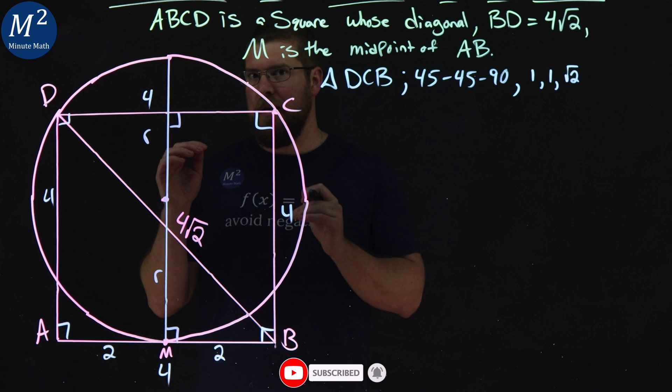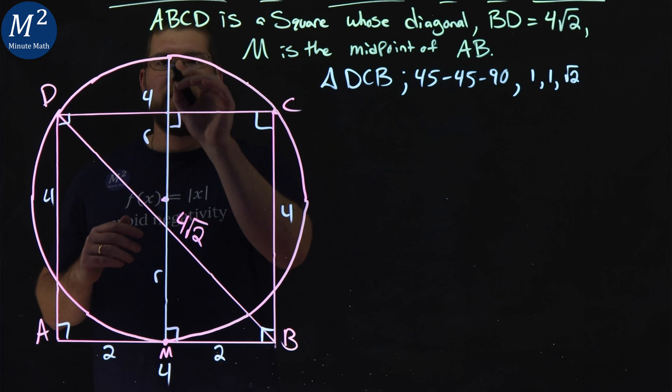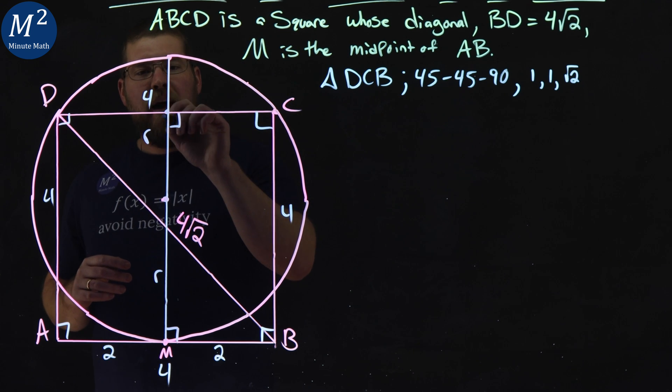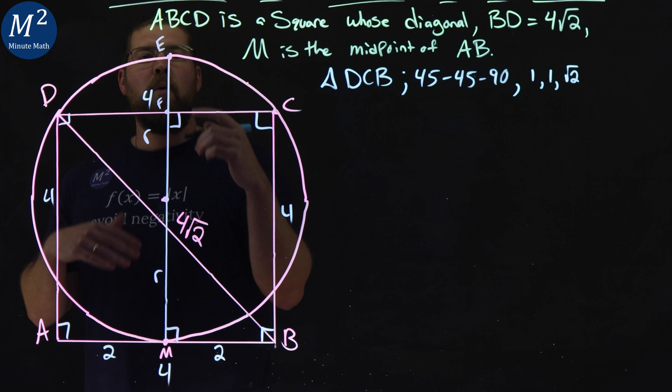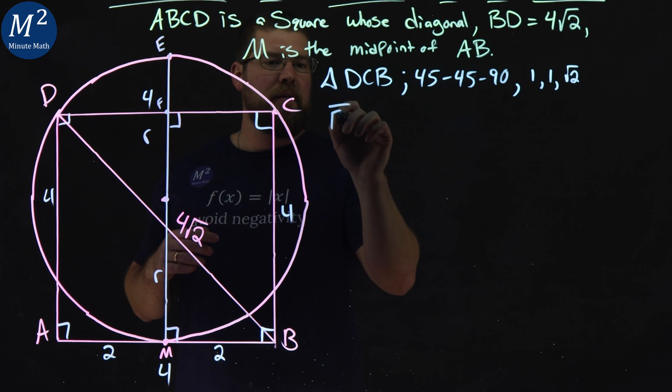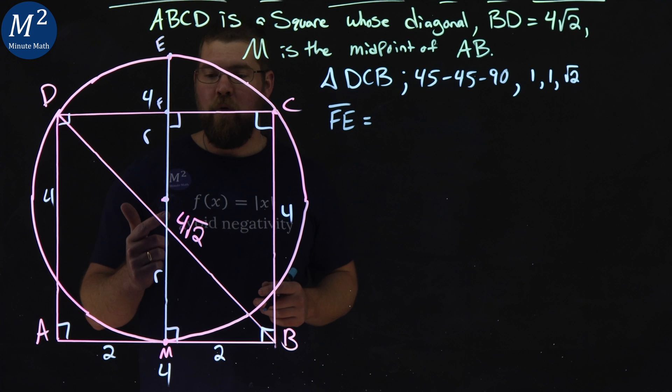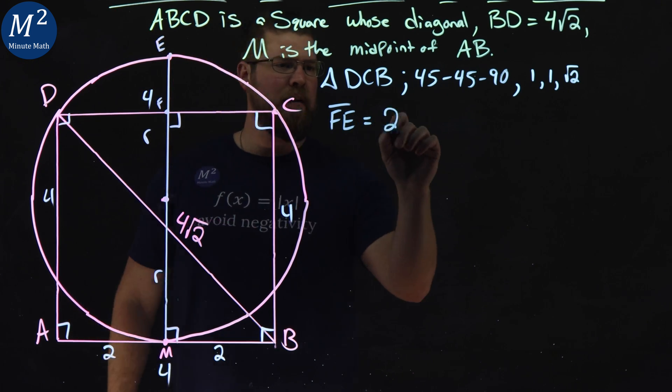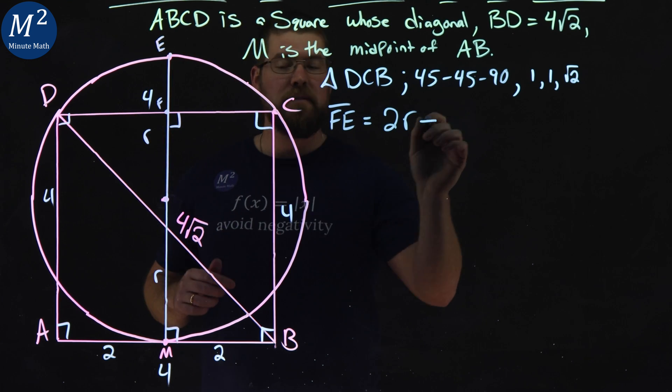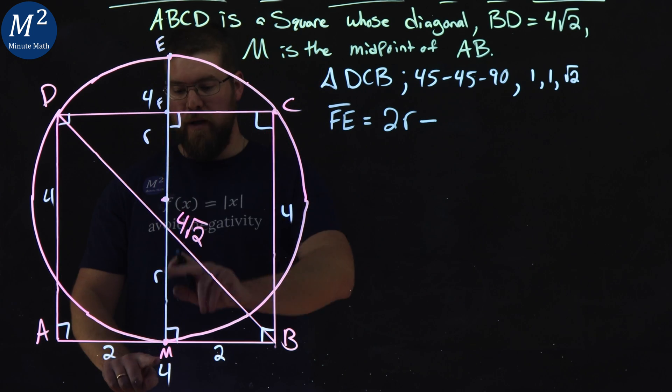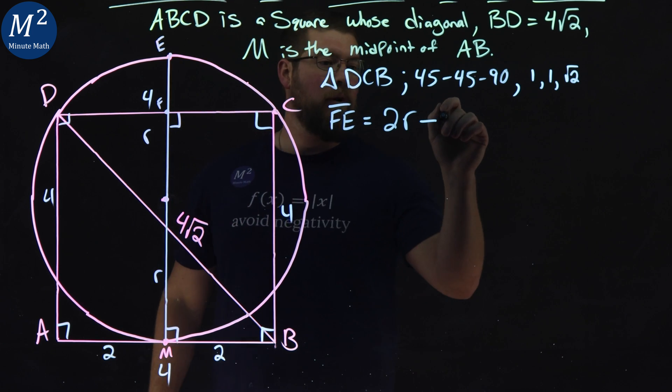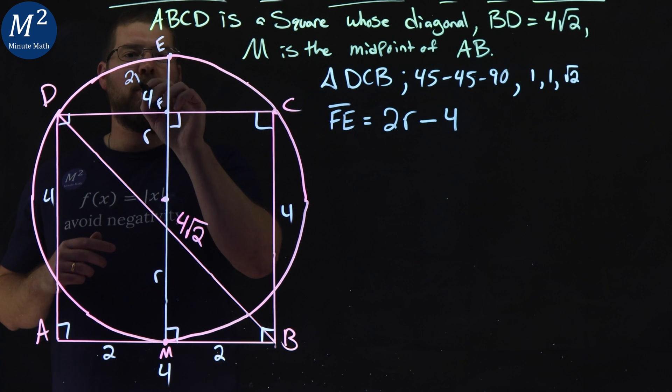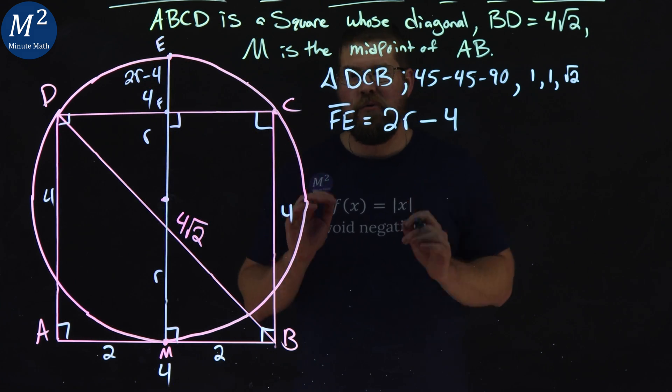Now here comes the tricky part. What is the length here of this to this? I called it F and E. So we have, let's call this point here F and this point here E. What is the length of FE? How can we find that? Well, we have the overall length of the whole circle, which is going to be 2R, R being the radius, 2R minus the length of the square to that point here, F to M, which is going to be 4. So FE has a length of 2R minus 4.